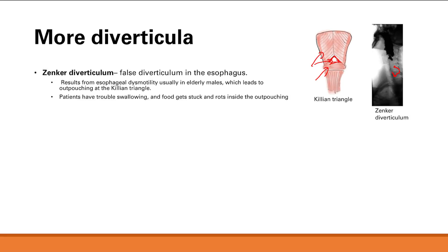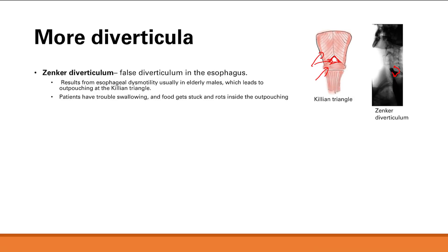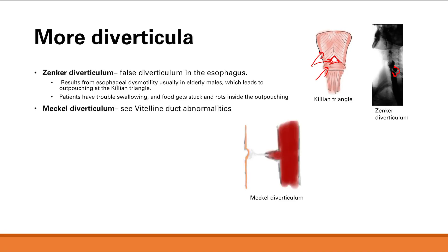Patients with Zenker's diverticulum present with trouble swallowing, and food gets stuck in the outpouching. As the food sits there it starts to rot, leading to foul breath and gurgling sounds. So in summary: older patient, esophageal dysmotility causing higher intraluminal pressure, outpouching in the Killian triangle, food gets stuck, trouble swallowing, foul breath, and gurgling. Finally, Meckel's diverticulum is the only true diverticulum we cover — you can see this in the vitelline duct abnormalities section in pediatrics.